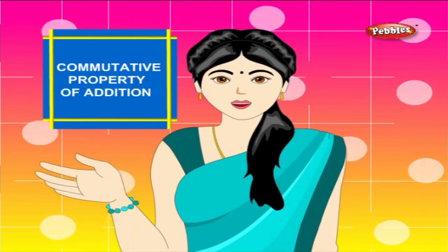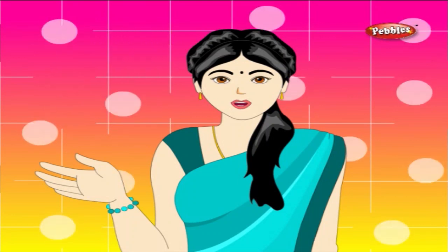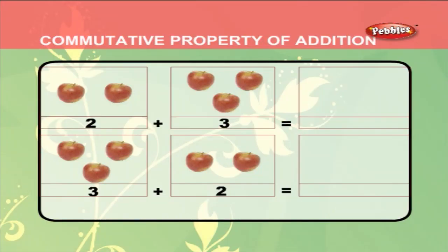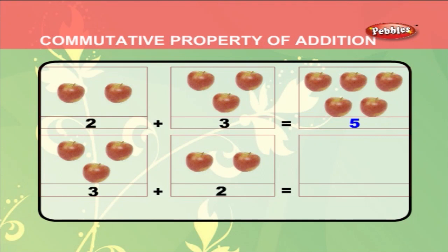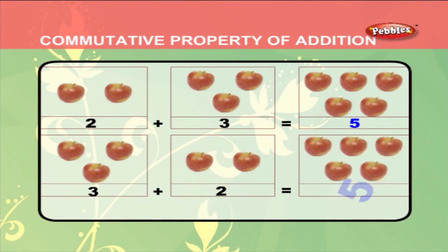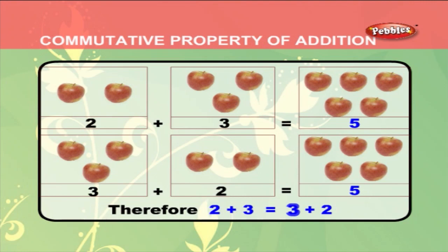Commutative property of addition. This means 3 plus 2 and 2 plus 3 gives the same answer, that is 5. Let us see this example. Here there are 1, 2 apples plus 1, 2, 3 apples which is equal to 5 apples. In the same way, 1, 2, 3 apples and 1, 2 apples will give you the same total of 5. Therefore, 2 plus 3 is equal to 3 plus 2.